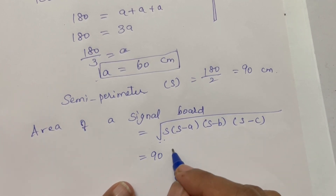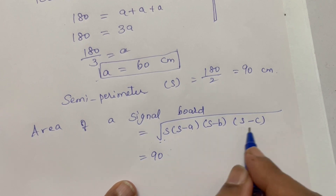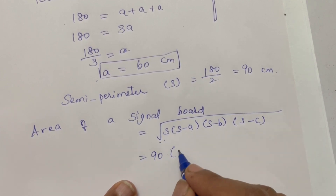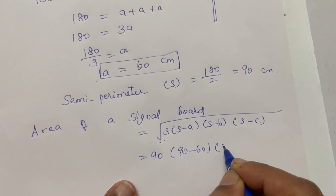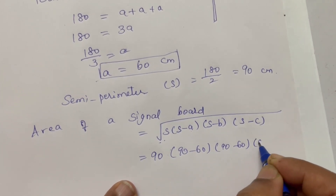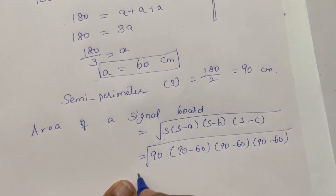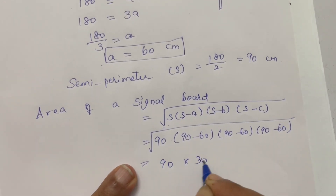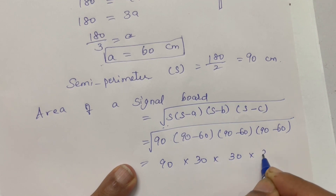For Heron's formula, the semi-perimeter s equals 90. Then s minus a equals 90 minus 60 equals 30. So we have 90 into 30 into 30 into 30 under the square root.